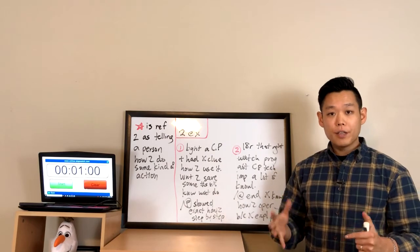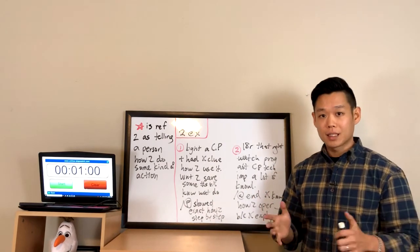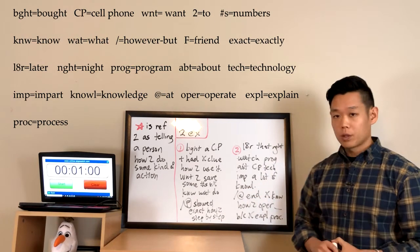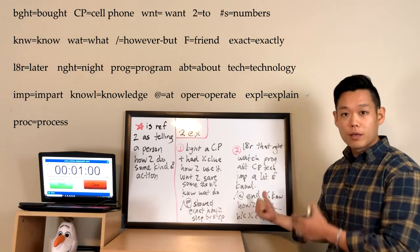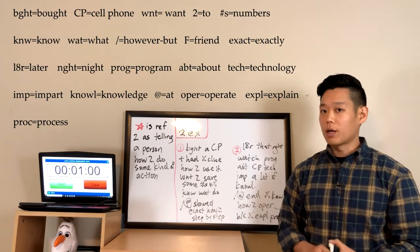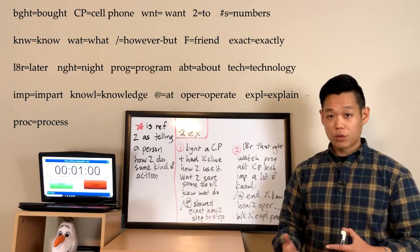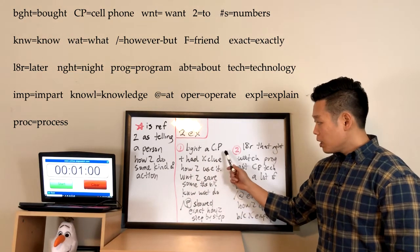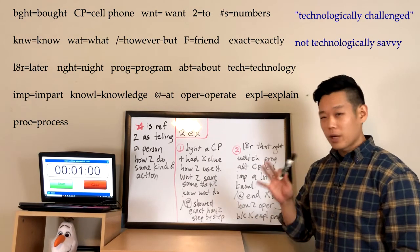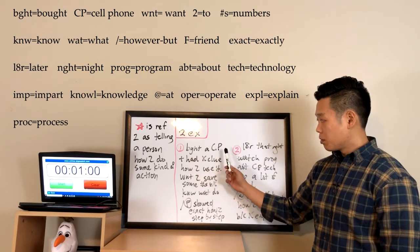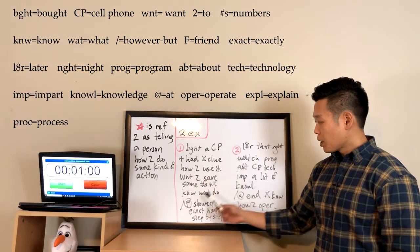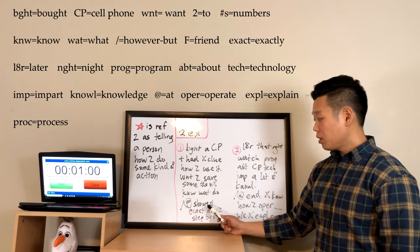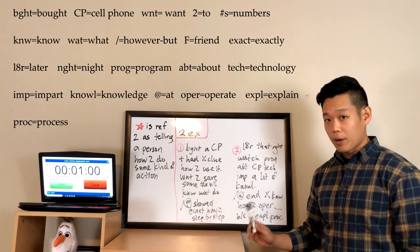The professor gave two examples explaining process explanation. The first was direct process explanation and the second was informative process explanation. For the first example: the professor bought a cell phone, had no clue how to use it, wanted to save some numbers, and did not know what to do. However, one of his friends kindly showed him exactly how to do it step by step.